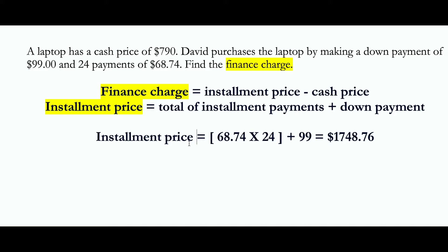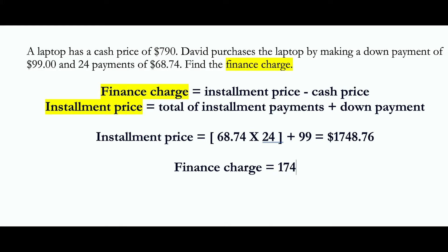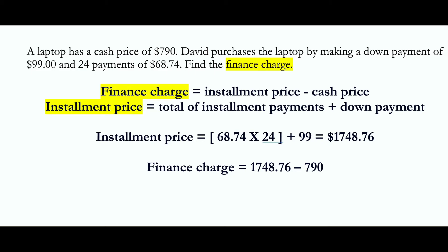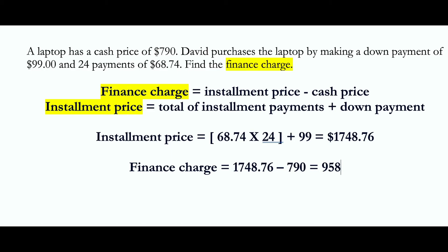We found the installment price, so now we can find the finance charge. Therefore, finance charge equals $1748.76 minus the cash price of $790. Therefore, finance charge is equal to $958.76.